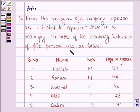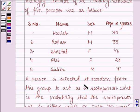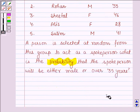Particulars of five persons are as follows. A person is selected at random from this group to act as a spokesperson. What is the probability that the spokesperson will be either male or over 35 years?